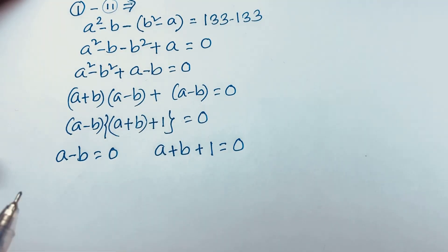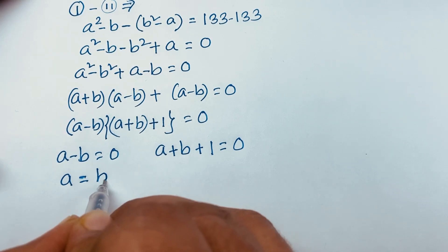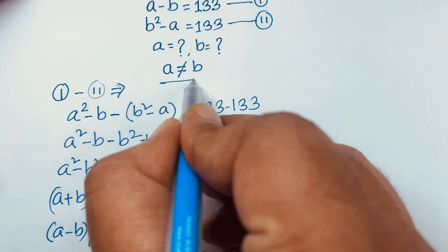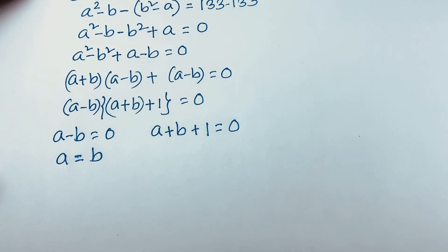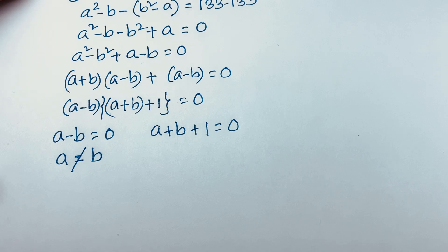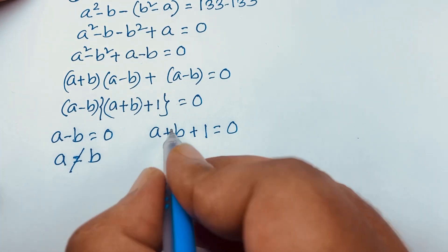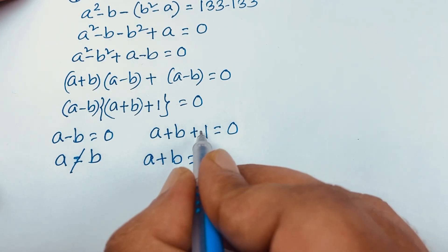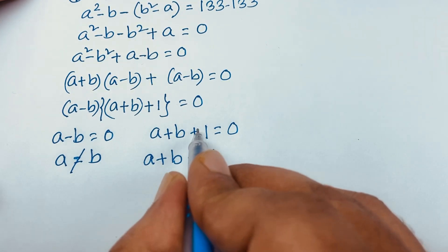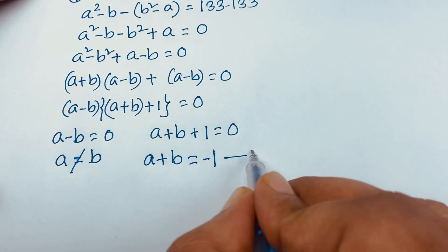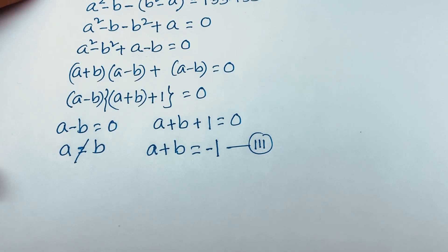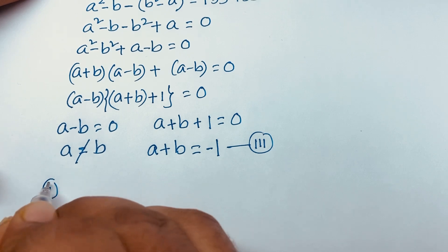In the first case, a equals b — but remember, a is not equal to b, so we discard that. In the second case, a plus b plus 1 equals zero, which means a plus b equals minus 1. This is our third equation.